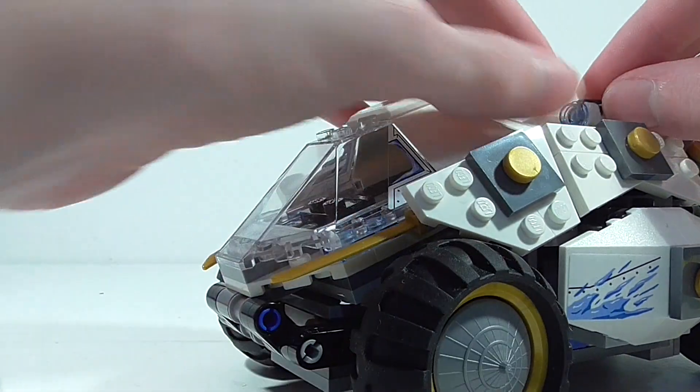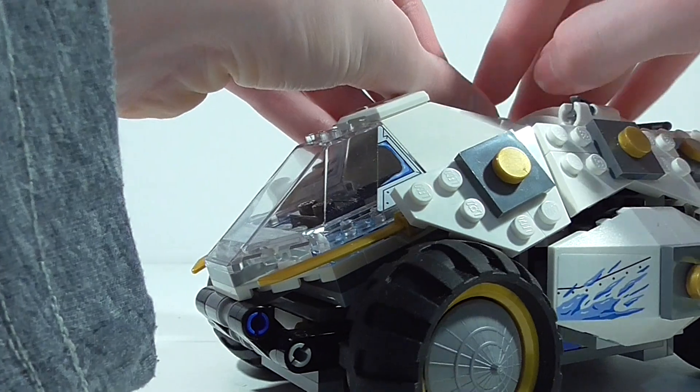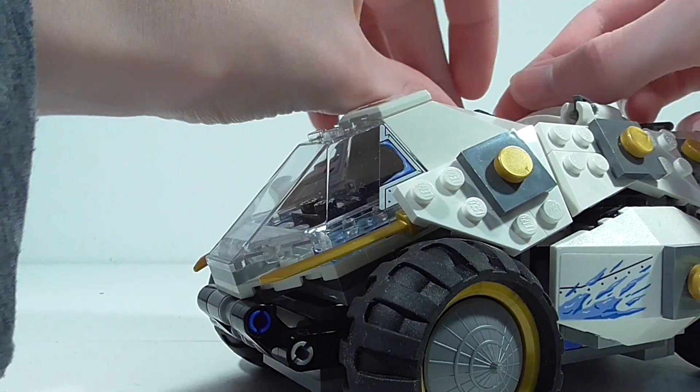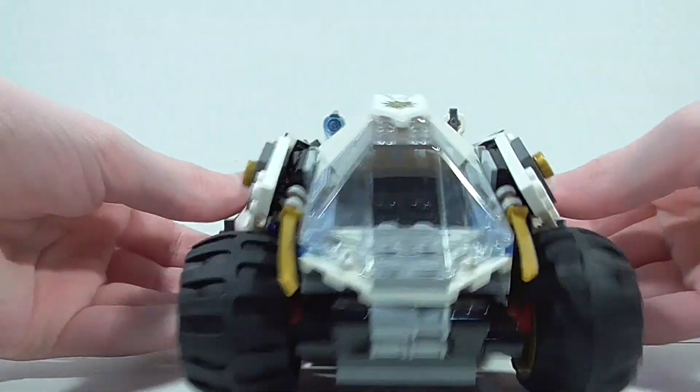On the top here, we can see we've got two stud shooters. And you can kind of press down on those to shoot them off. And it does launch these light blue little studs. So you can just attach those on there. So that is its first line of defense.